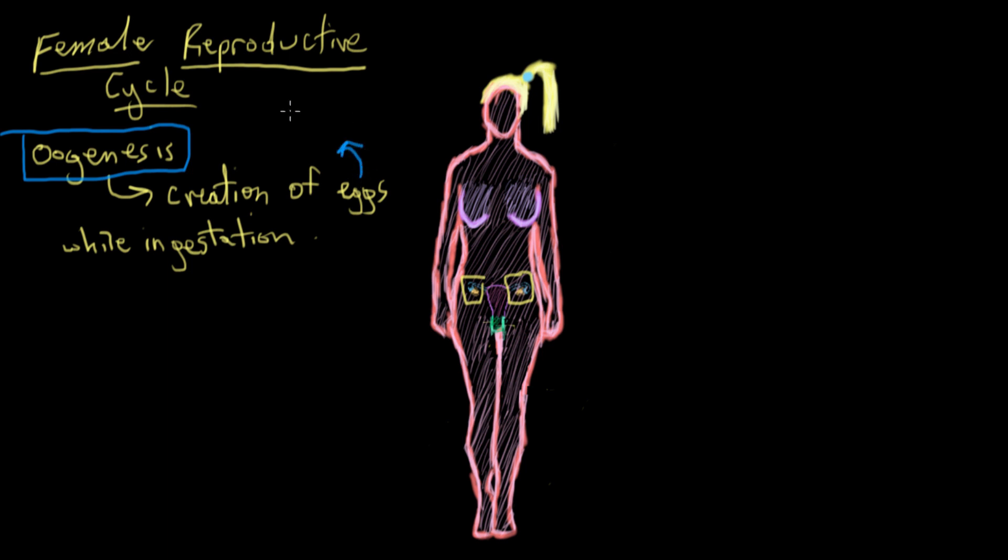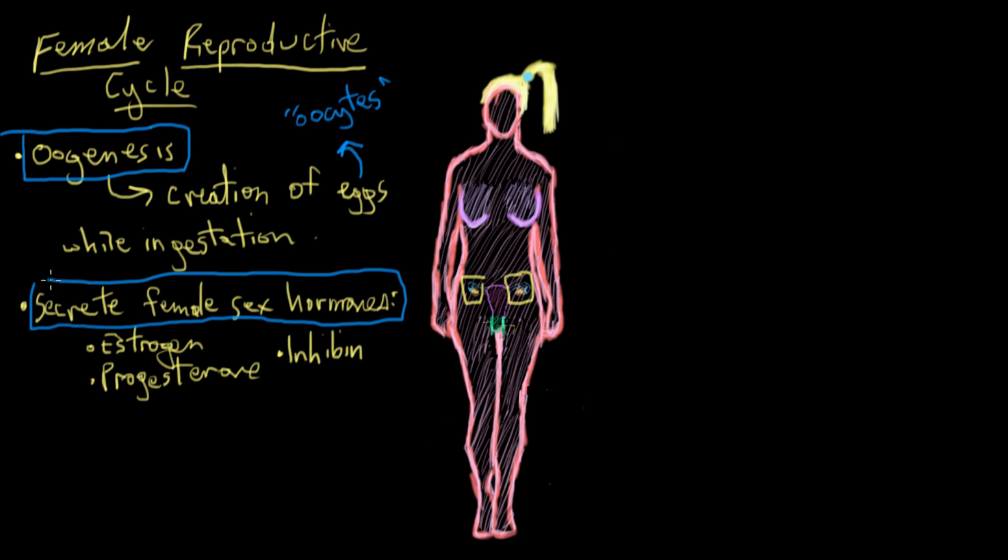By the way, another word for egg is oocyte. After an egg matures, it's pushed out of the ovary in a process called ovulation. The other major function of the ovaries is to secrete the female sex hormones: estrogen, progesterone, and one called inhibin. We'll talk about their functions a little bit later on.